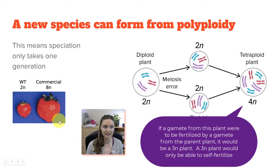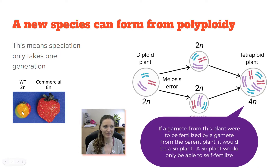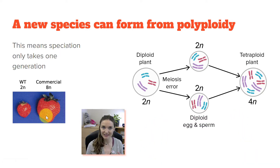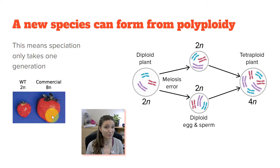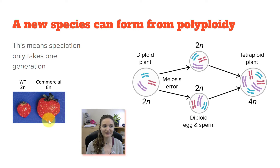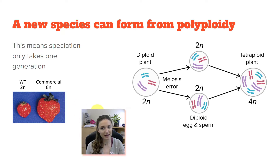We've only taken one generation to form a brand new species, and this is actually how we get a lot of our domestic crops. If you've ever picked a wild strawberry and compared it to commercial strawberries growing on a farm, commercial ones are much larger — because they are polyploid. A lot of our commercial crops were developed through this process of creating polyploid plants, because polyploid plants produce larger fruit. It's much more economical to grow something with larger fruit. So can it happen quickly in one generation? Yes — but usually it takes much longer.